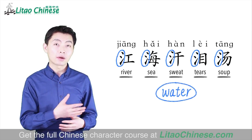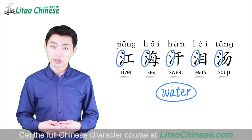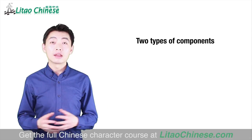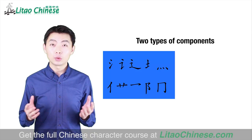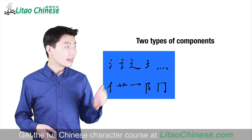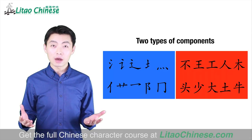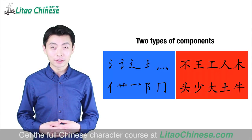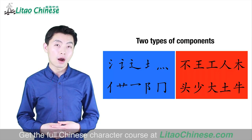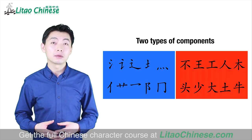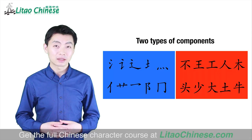You don't need to remember these characters now. We are going to learn them in our future courses. Actually, there are two kinds of components. The first ones are like the water-related component — they can only be part of characters. The other components are just very simple characters, like all the characters we have learned so far. They are characters by themselves, and they can also be used to form other more complex characters.